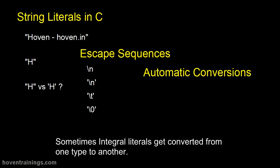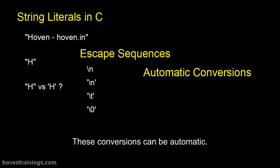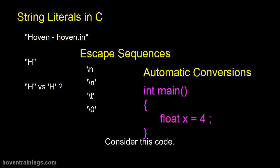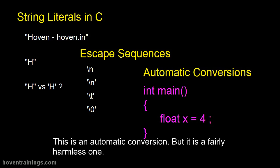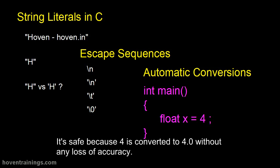Sometimes integral literals get converted from one type to another. These conversions can be automatic. These conversions are done by the compiler. Consider this code. In this statement, a signed integer is being stored in a float. Obviously, the integer will be automatically promoted to a float type. This is an automatic conversion. But it is a fairly harmless one. It's safe because 4 is converted to 4.0 without any loss of accuracy.